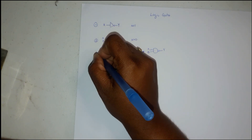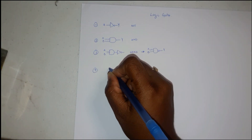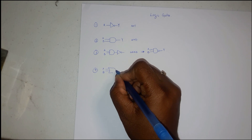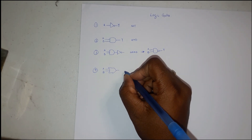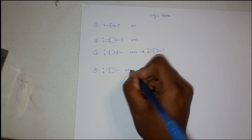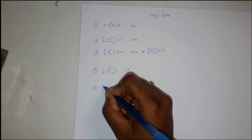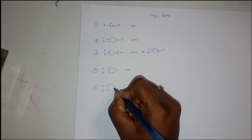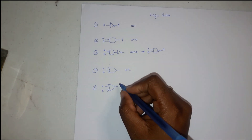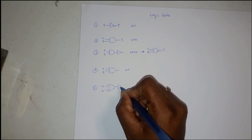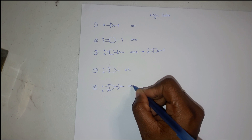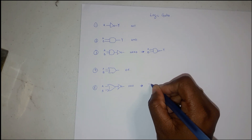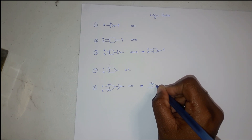Gate four is the OR gate. It also has two inputs but a different shape. Then we have the NOR gate. The NOR gate is just like the NAND gate — it's a NOT-OR gate. The standard drawing in your textbook is the OR gate shape with a small circle on the output, and again it has two inputs and one output.